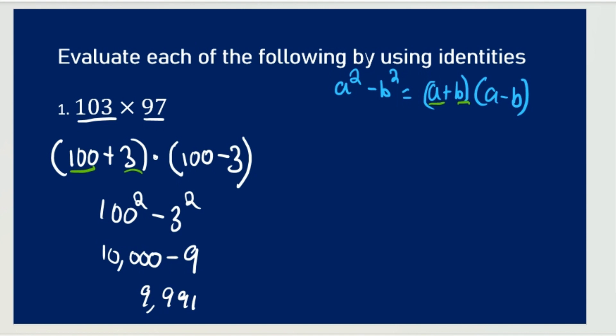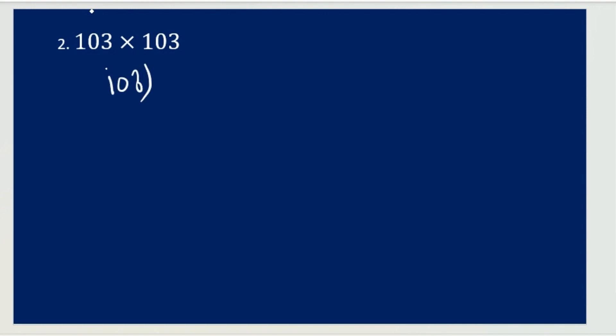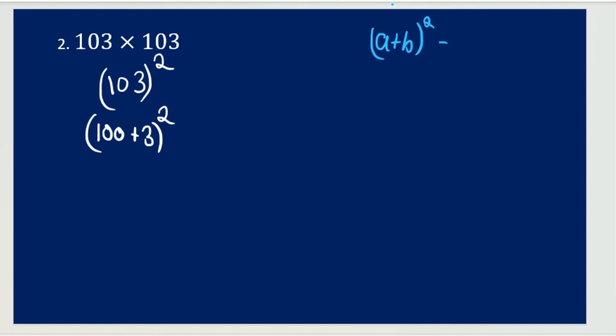So this question was pretty easy. Now let's move on to a bit harder one, but not too hard. This one is 103 times 103. How can you write 103 times 103? We can just write it as 103 whole square. Now how can you write 103? Again, we can write it as 100 plus 3 — and don't forget the whole square. Now again, what formula do we think of? The formula to solve 100 plus 3 whole square is A plus B whole square equals A squared plus B squared plus 2AB.